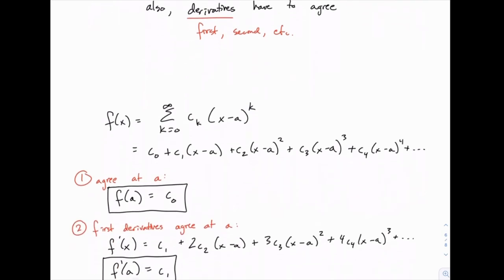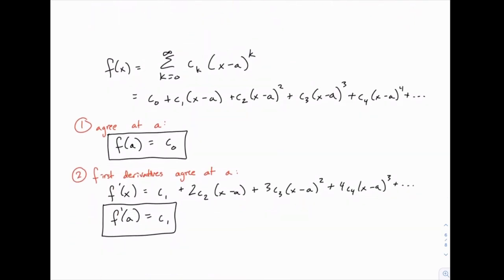If we say that this function and this series have to agree when x equals a, we just plug in a. Notice that when we do, almost everything on the right-hand side disappears, because we have x minus a in every term except the first. So all that remains is the first coefficient c0. That means f of a and c0 have to be equal — the first coefficient is just the value of our function at a. For instance, for the Maclaurin series of e to the x, we plug in 0 to get e to the 0, which is 1. So c0 equals 1.